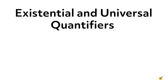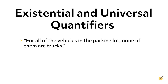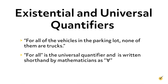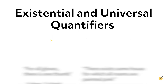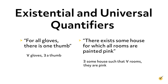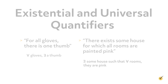On the other hand, if we searched the parking lot and found zero trucks, we could say 'for all of the vehicles in the parking lot, none of them are trucks.' The words 'for all' represent the universal quantifier, written in shorthand as an upside-down A. 'For all' can also be pronounced as 'for every' or 'for each.' It is even possible to use both quantifiers in a sentence — for example, 'for all gloves there is one thumb,' or 'there exists some house for which all rooms are painted pink.'